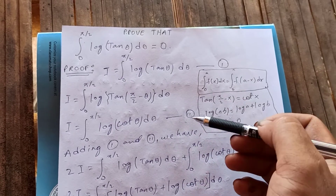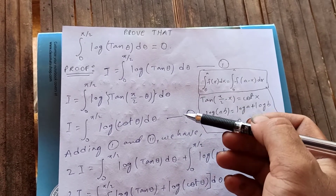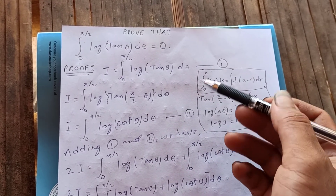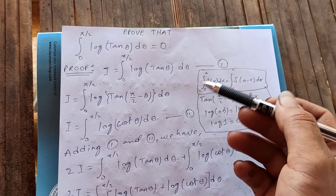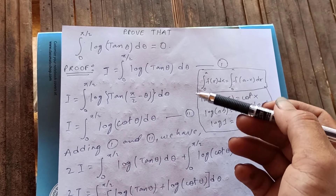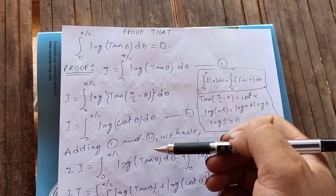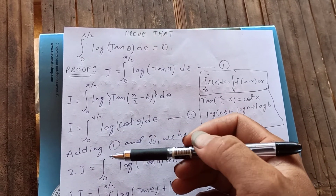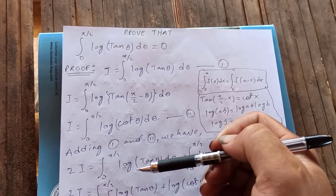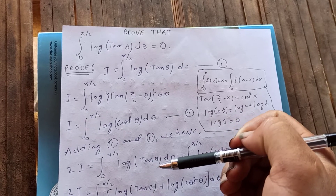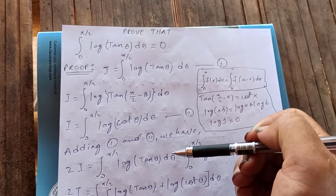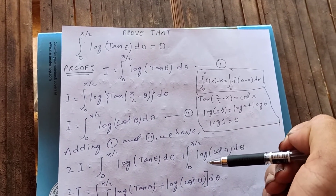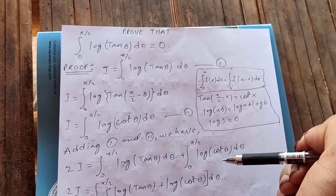Now adding equation 1 and equation 2, we get 2I equals the integral from 0 to pi over 2 of log(tan θ) dθ plus the integral from 0 to pi over 2 of log(cot θ) dθ.